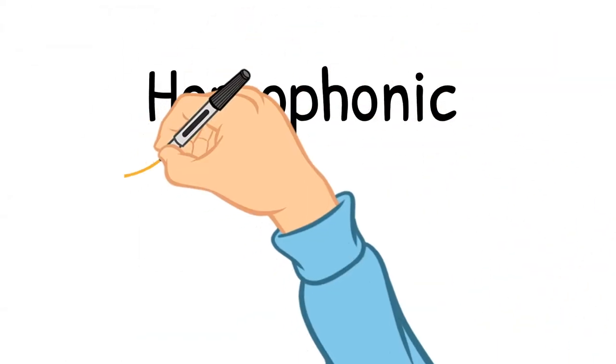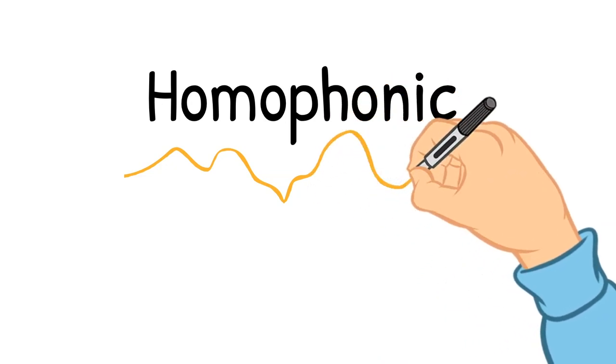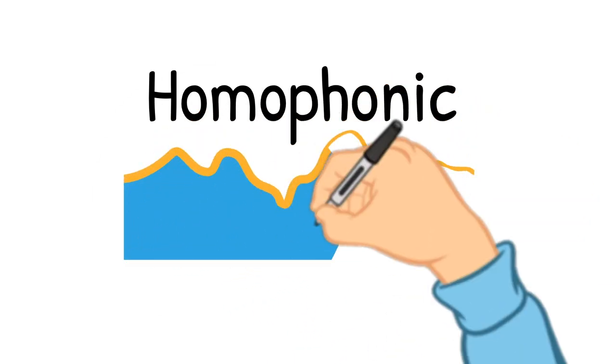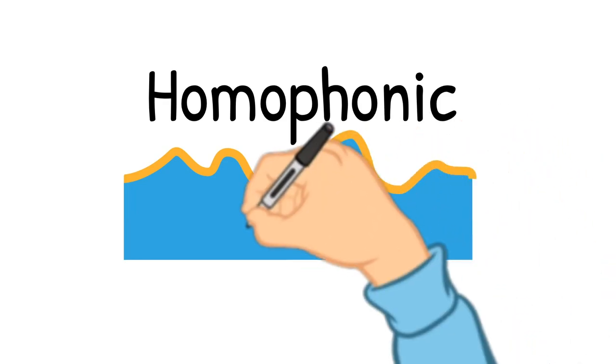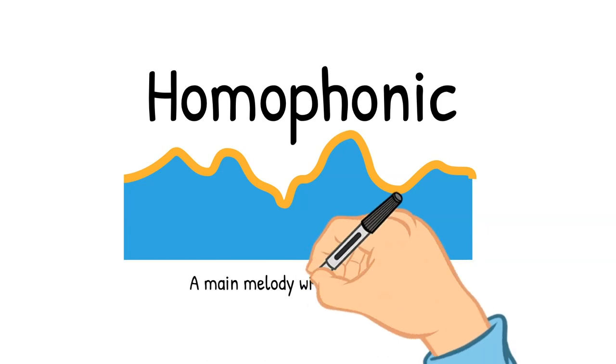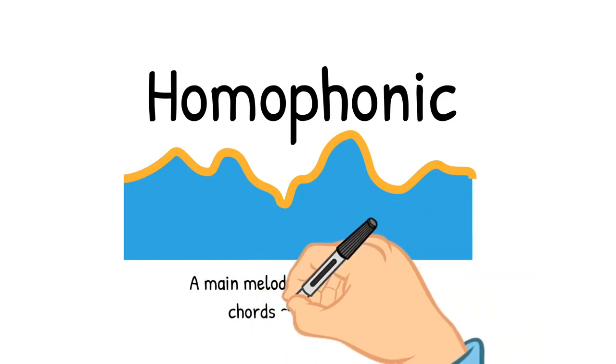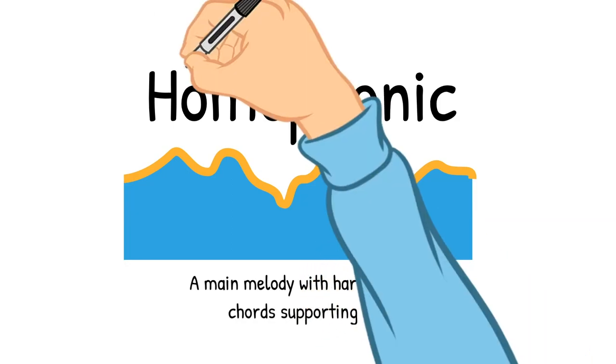Homophonic music. Most pop music that we listen to will be classed as homophonic music. This is really a melody being sung and some chords in the background. Just something to accompany the main melody. So you could think of this as the singer and a guitarist or a piano just playing chords in the background. Let's have a listen.